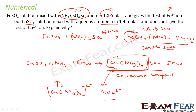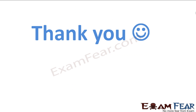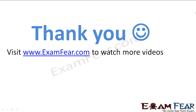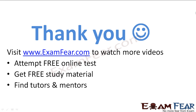Hope you understand. In the first reaction, the product is a double salt, which disintegrates in solution giving Fe²⁺ ions. In the second reaction, the product is a coordination compound, which does not break completely, and thus you do not get free copper ions. Thank you. Visit examfear.com to watch more videos, attempt free online tests, get study materials, find tutors and mentors, and much more. Thanks again.